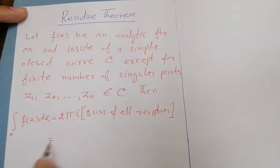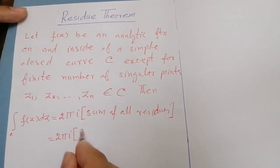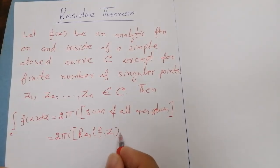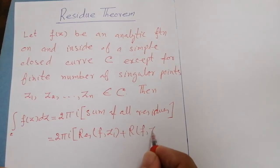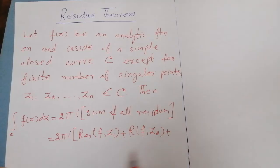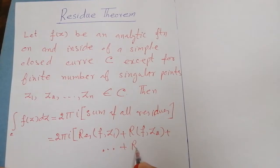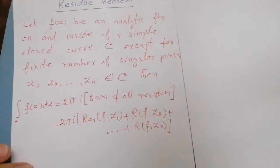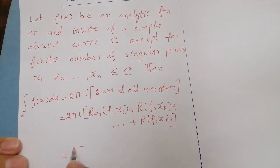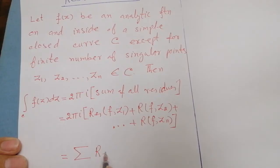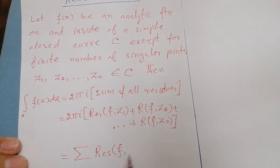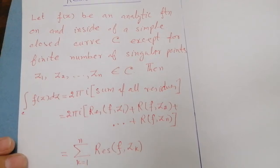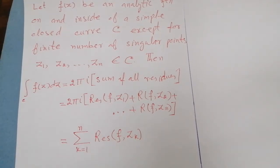Then the integration of the function f of z is equal to 2 pi iota times the sum of all residues. We can write this as 2 pi iota times the residue of f at the first point plus the residue of f at the second point, and so on up to the residue at the last point. In summation notation, this equals the summation of the residue of f at point z_k, where k runs from 1 to n.